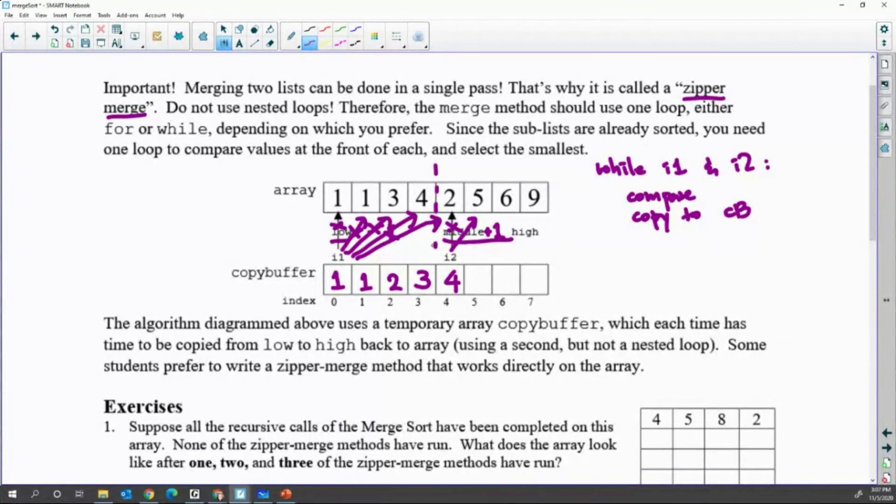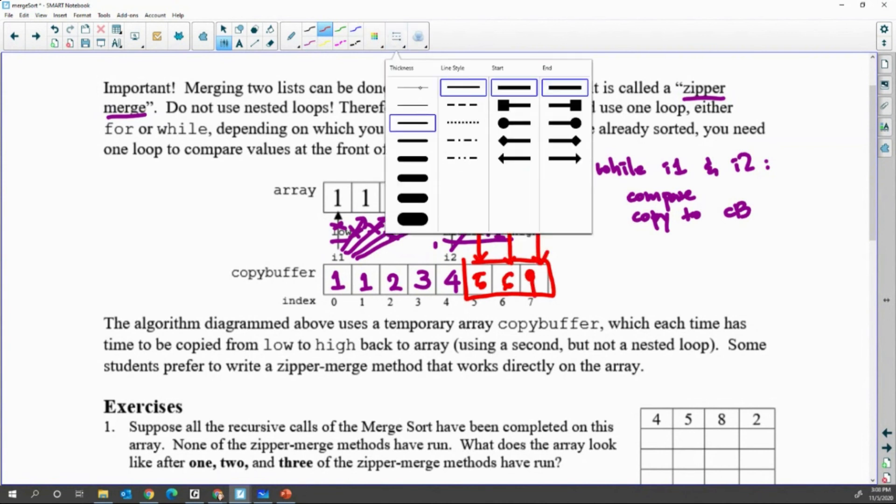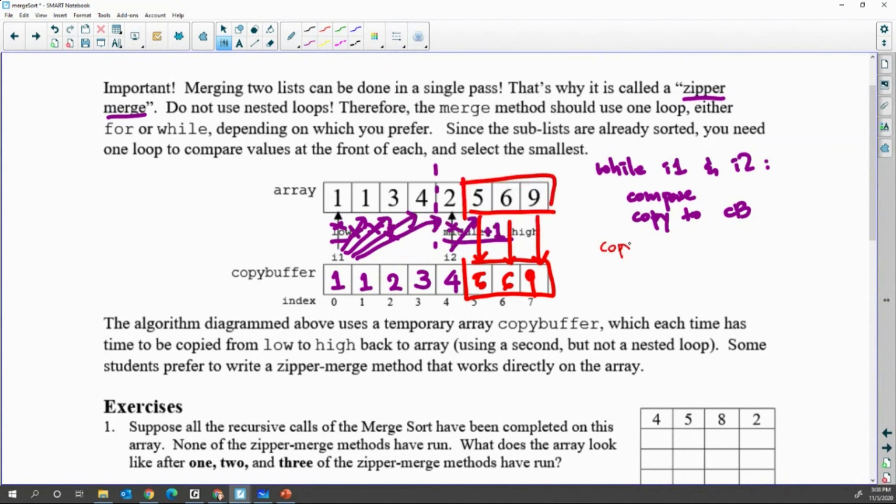Now I1 is in the lead, because I1 can go up to only middle, that means this value is done. But there are still 3 spots left over. So any left over in any side in list 1 or list 2, if there is any left over, you are going to just copy to the copy buffer. Copy any left over from list 2 or array to copy buffer.